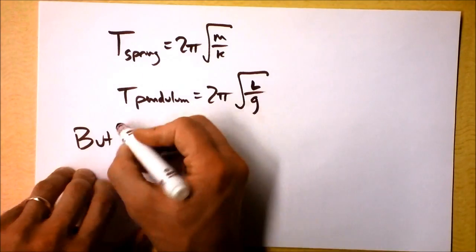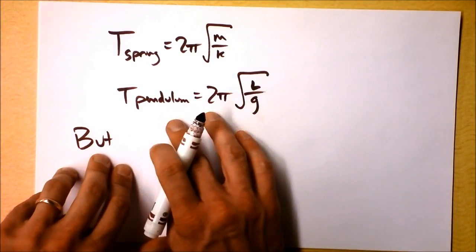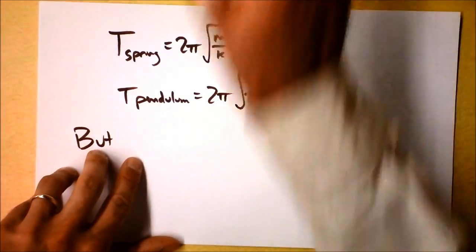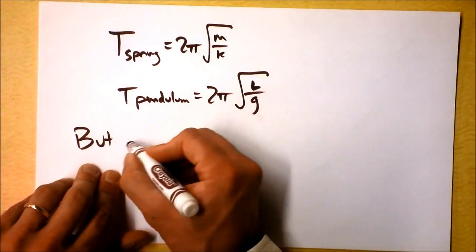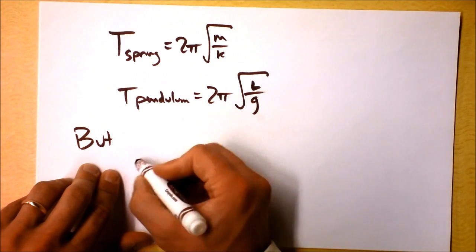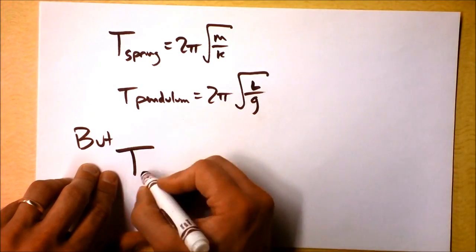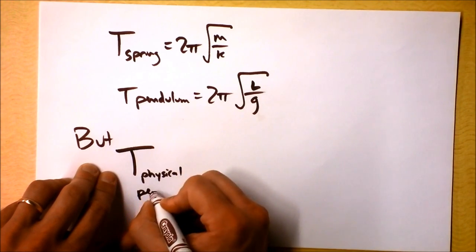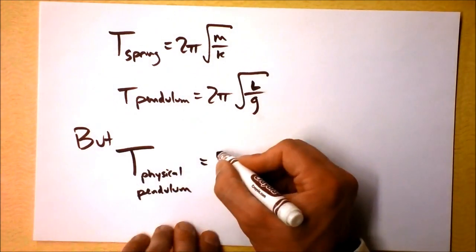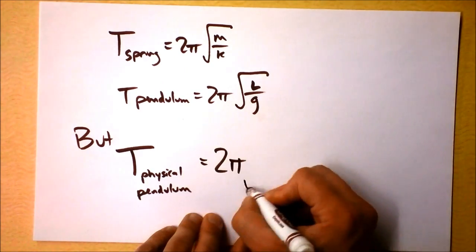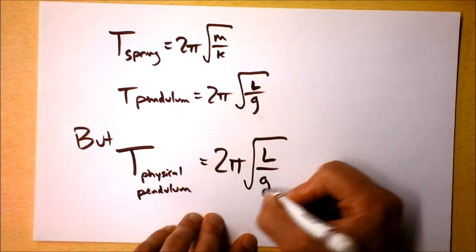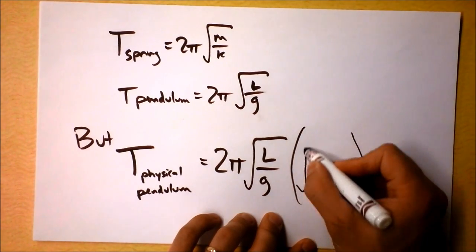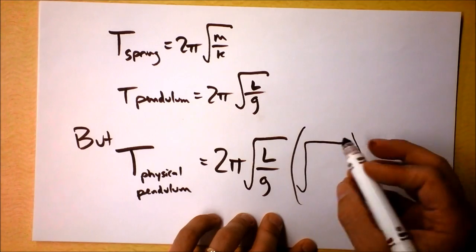But this is a simplification because we've assumed that all the mass is at a single point. We assumed all the mass was right there at that single point. So that simplification is not always valid. And I'm not going to derive this, but I'm going to tell you that T for a physical pendulum is just slightly more complicated. It's going to start out the same, 2π times the square root of L over g. But it's modified by an additional term, which is all inside the square root.